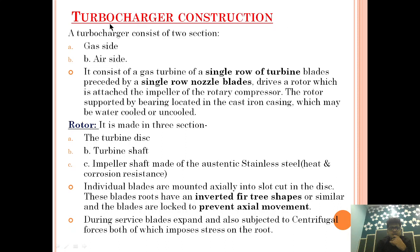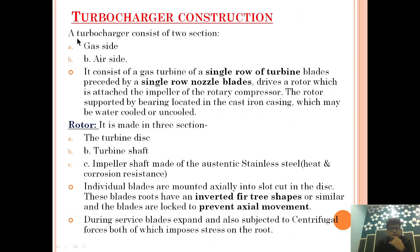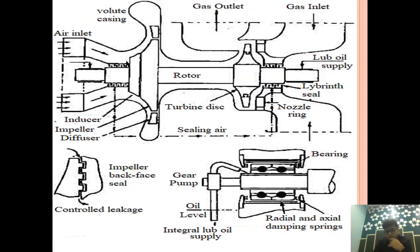So the first question is: what is the turbocharger? Basically a turbocharger is a device in which we are using the exhaust gas to produce compressed air for combustion. How we are doing it — we are dividing the turbocharger into two parts. The turbocharger consists of two sections: the gas side and the air side.